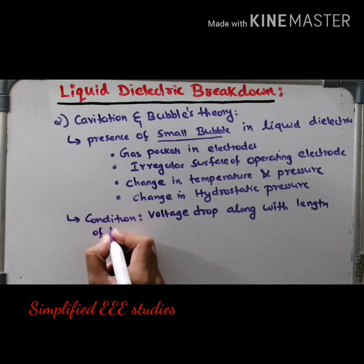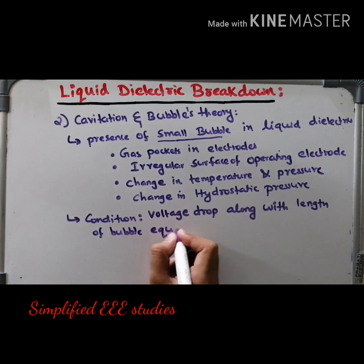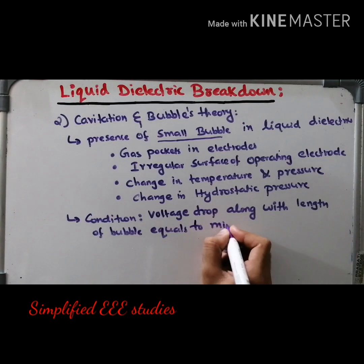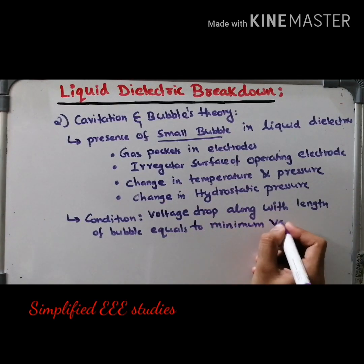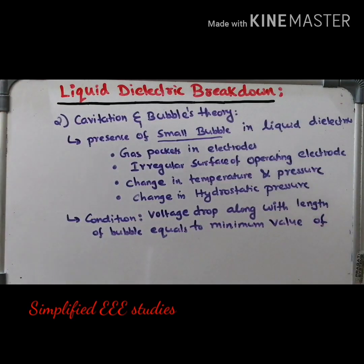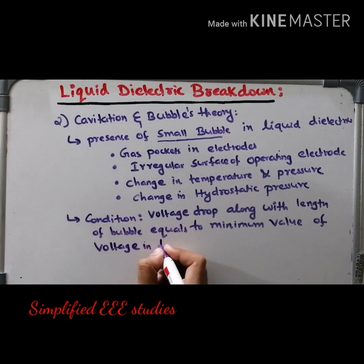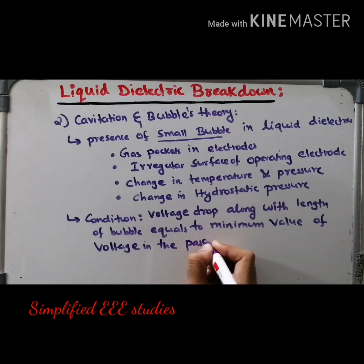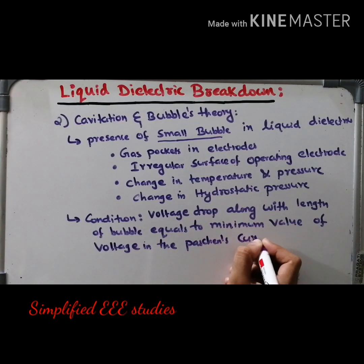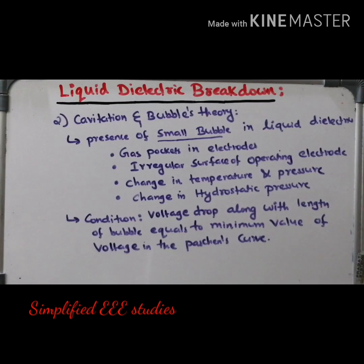The condition is: voltage drop along the length of the bubble equals the minimum value of voltage in Paschen's curve. Yesterday I discussed Paschen's curve — the graph of breakdown voltage against distance — from which you can calculate the minimum value of breakdown voltage. So voltage drop along the length of the bubble is directly equal to the minimum value of breakdown voltage in Paschen's curve.